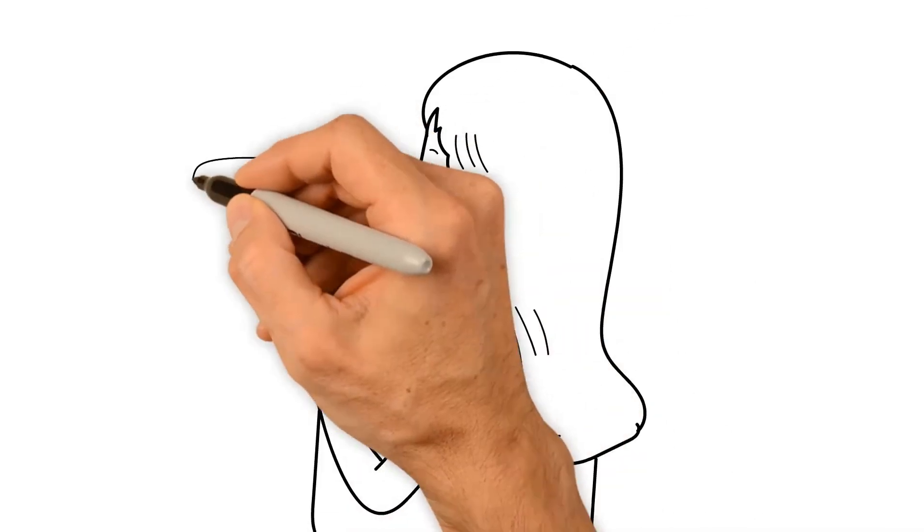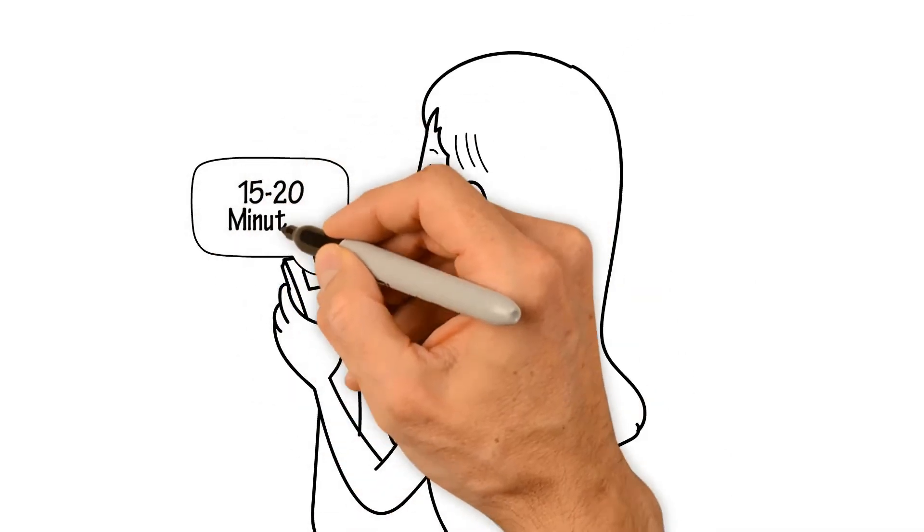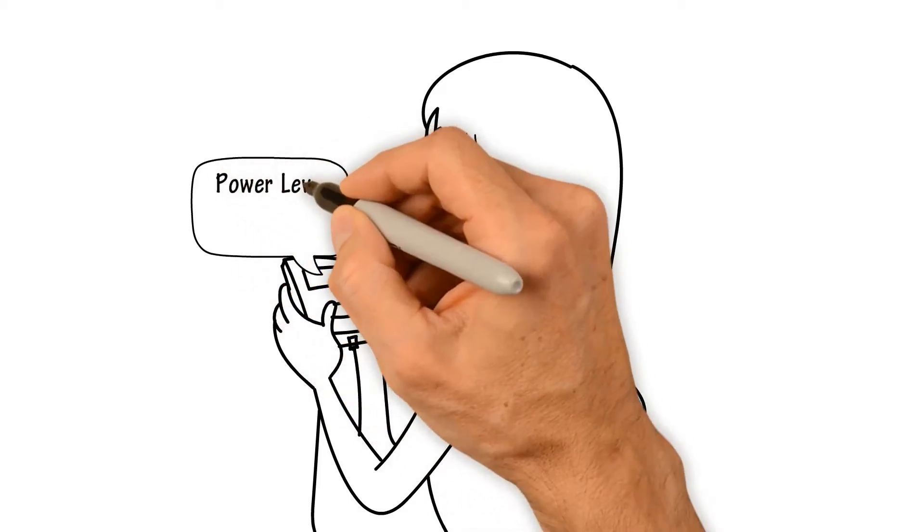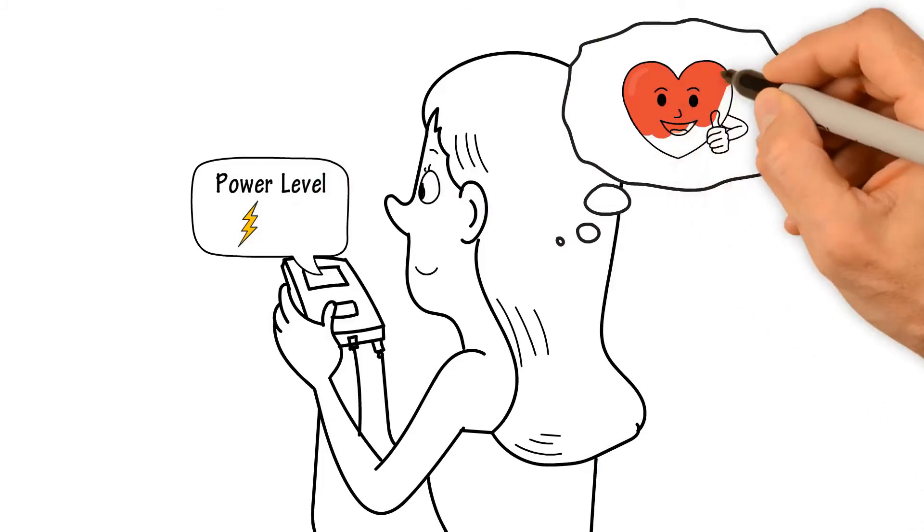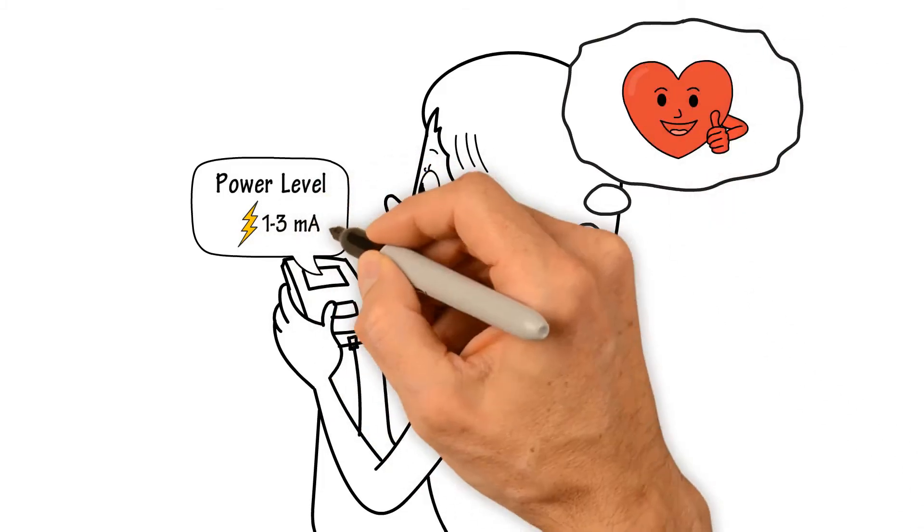Set treatment timer to 15 to 20 minutes. Set power level. It's important to treat at a level that's comfortable for you. Most patients begin low at 1 to 3 milliamps, and gradually increase over time.